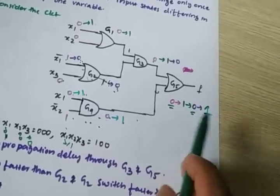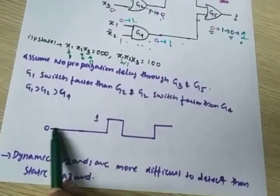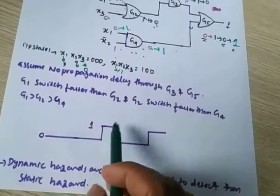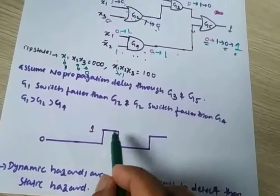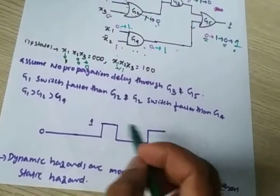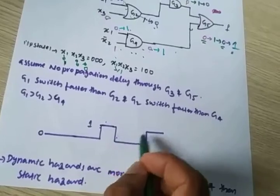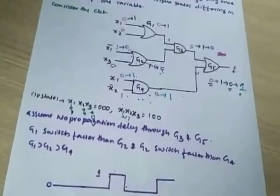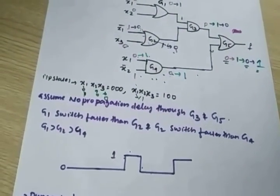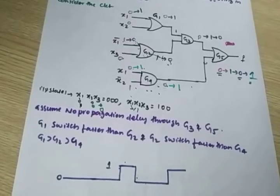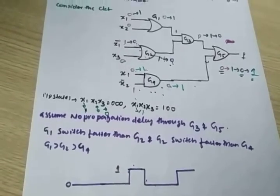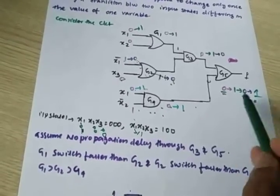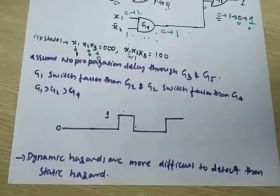So in total, three transitions occur at the output: first 0 to 1, then 1 to 0, then 0 to 1 again — three transitions for a single input bit change. This is exactly what defines a dynamic hazard: three or more transitions at the output when only one input bit changes.